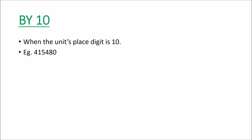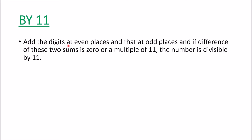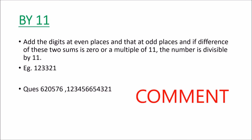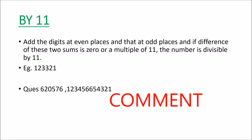Now let us see the divisibility test of 11. To check divisibility by 11, we add the digits at odd places and the digits at even places. If the difference of these two sums is 0 or a multiple of 11, the number is divisible by 11. For this number, the sum of odd-place digits is 1 plus 3 plus 2 equals 6, and the sum of even-place digits is 2 plus 3 plus 1 equals 6. The difference is 0, so this number is divisible by 11. Check the two numbers on screen and write your answers in the comment box.